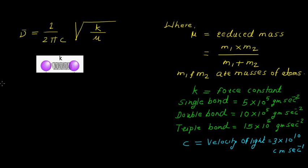For example, if you take the example of carbon and hydrogen, we can calculate the wave number or the vibrational frequency of these two atoms. So here m1 is carbon and m2 is hydrogen.